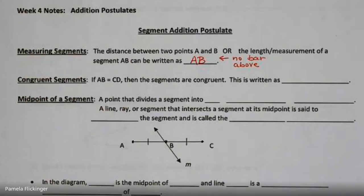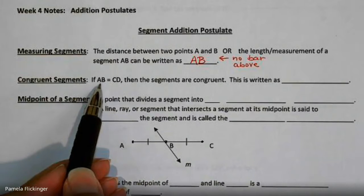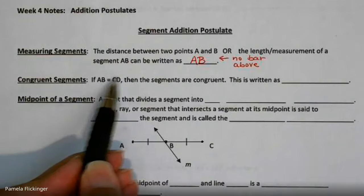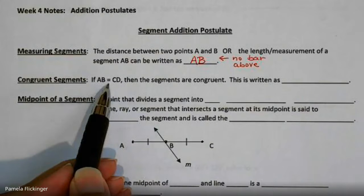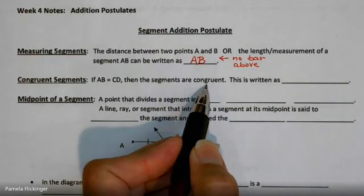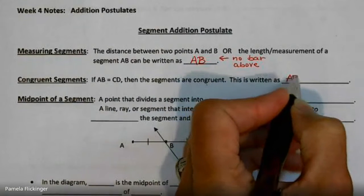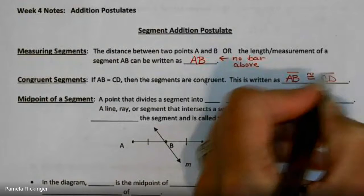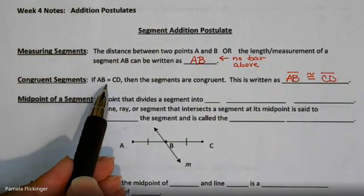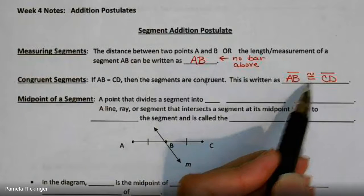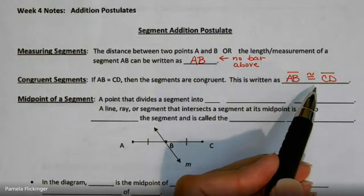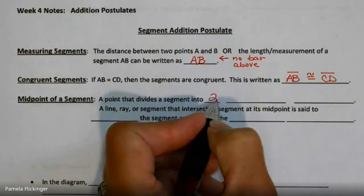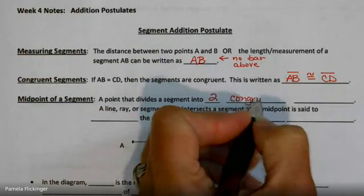Congruent segments: if the measure of segment AB equals the measure of segment CD — notice there's no bar, so we're talking measurements — and they equal each other, then we can say the segments are congruent. We would write that as segment AB is congruent to segment CD. No bar means measurement; with the bar is naming it; and then those segments are congruent.